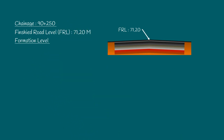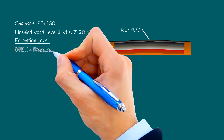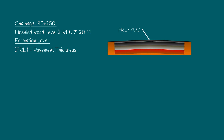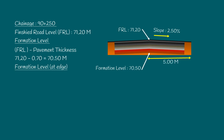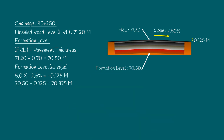Let us calculate the formation level of the embankment. The formation level is finished road level minus the total pavement thickness. Accordingly, the formation level here is 71.2 minus 0.7, equals 70.5 meters. Now let us calculate the formation level at the edge of the road. The given slope of the camber is 2.5%, meaning minus 2.5 cm at every 1 meter length. The embankment width at formation level is 10 meters. The camber flows at both sides starting from the road center and ending after 5 meters at the edge. Accordingly, the formation level at the edge is 5 meters × minus 2.5%, equals minus 0.125 meters, so the formation level at the edge is 70.50 minus 0.125, equals 70.375 meters.